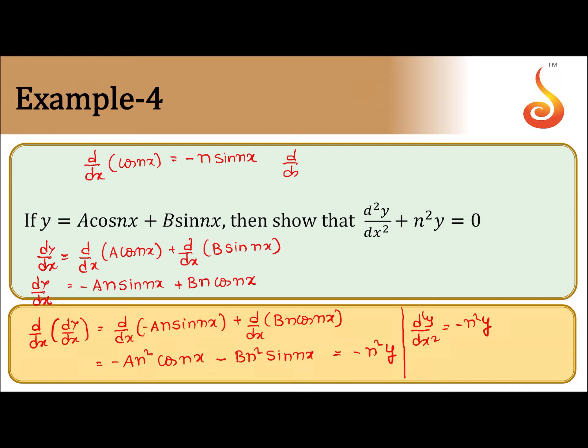And d/dx of sin(nx) - sin(x) into n - this is within the angle, you get n cos(nx). So using both results here, we got d²y/dx² equal to minus n²y.